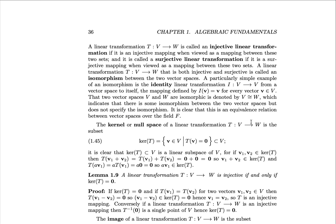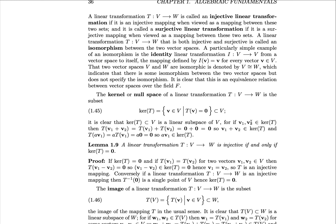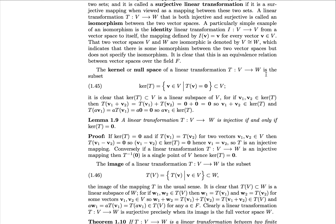Now to develop the idea of a linear transformation, we can consider the kernel or null space of that transformation. The kernel of the linear transformation T from V to W is the set of all V in V such that T of V equals zero. This is the set of V-vectors in V defined by the fact that their image is the zero vector in W, and we see that this kernel of T is a subspace of V.